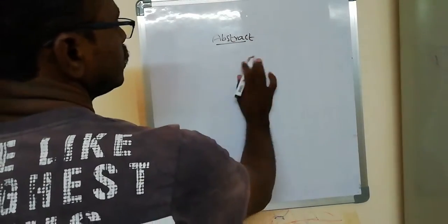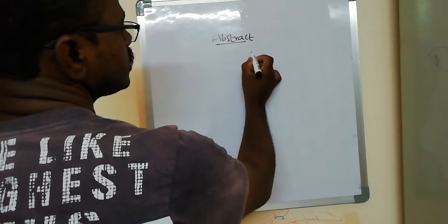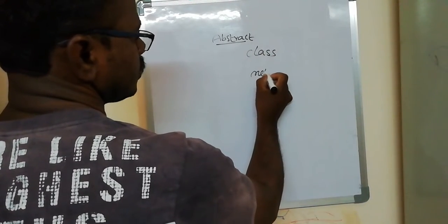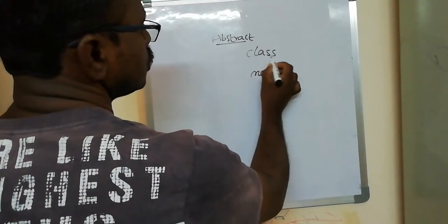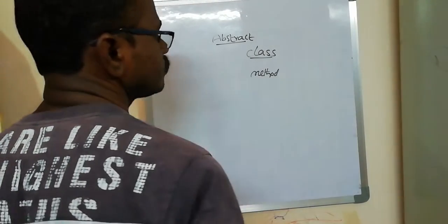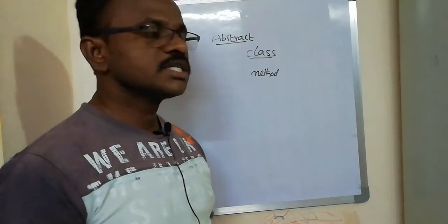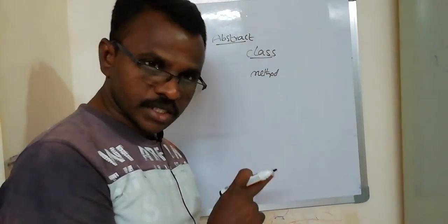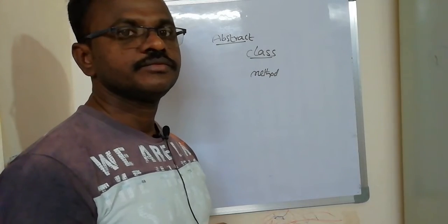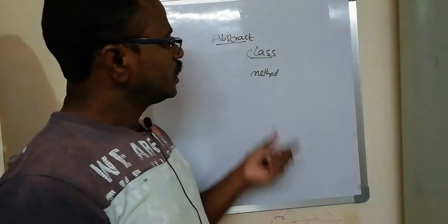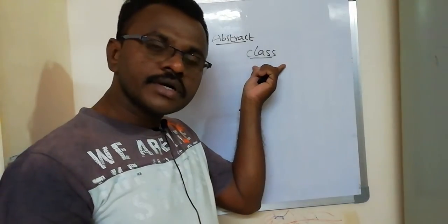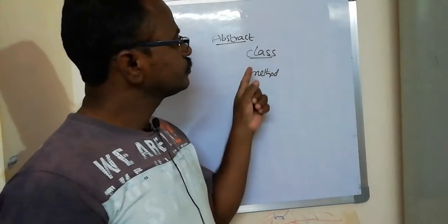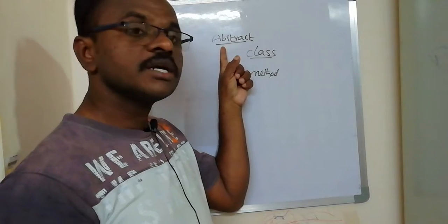Let's look at an abstract example. First of all, we will discuss what is meant by abstract class, and then what is meant by abstract method. An abstract class can contain one or more abstract methods, but we cannot create an object of this class because it contains abstract methods.